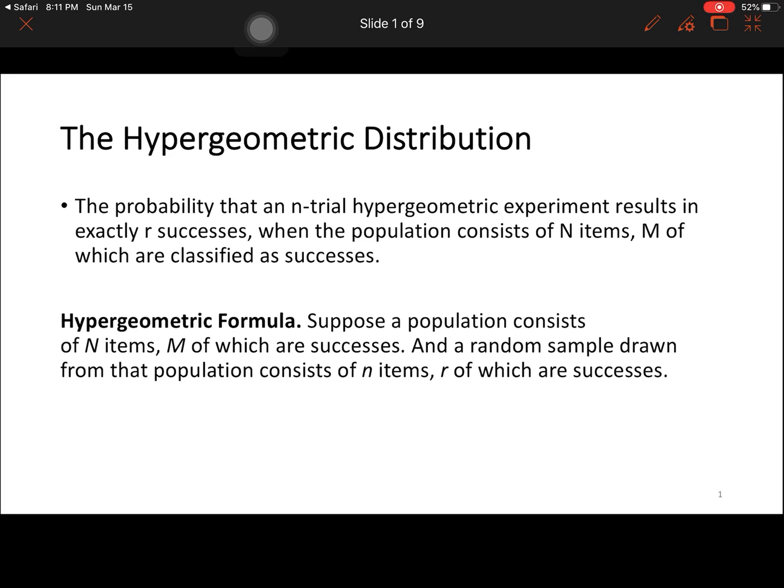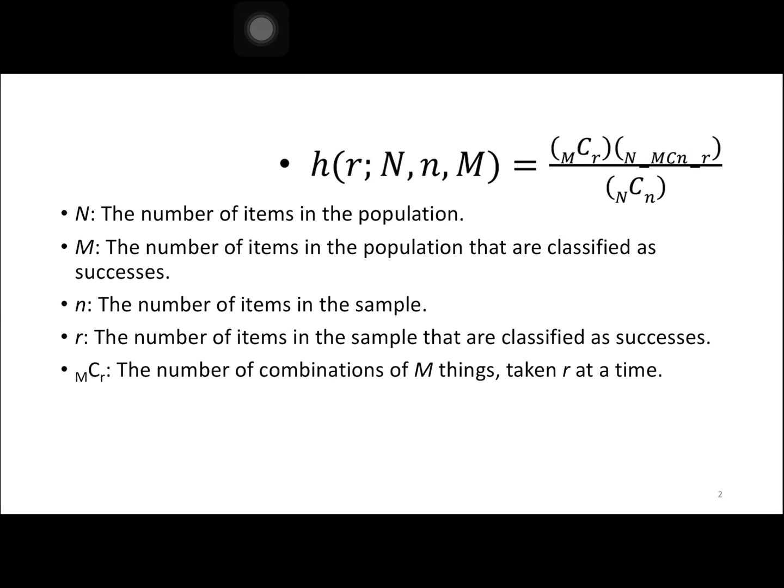For our hypergeometric formula, suppose a population consists of N items, M of which are successes, and a random sample drawn from the population consists of n items, R of which are successes. The formula is: M_C_R times (N minus M)_C_(n minus R), divided by N_C_n.